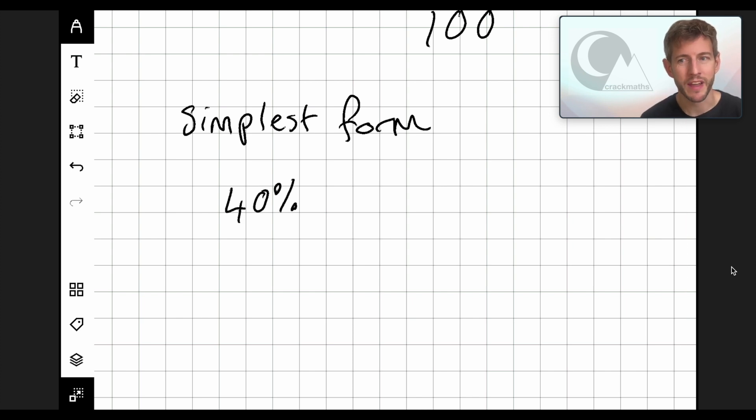So if we have 40%, we know that this is going to be 40 over 100. Now, we can simplify this fraction in several ways. We can divide both the top and the bottom by 10. And this will give us 4 over 10. And then we can half both the top and the bottom. So that'll equal to 2 over 5.